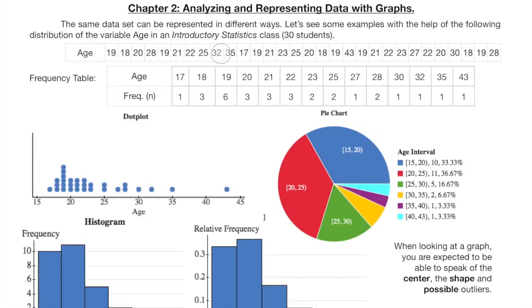Here I have the ages of 30 students in an introductory statistics class. This can be called the raw data set. Very often we prefer to have it in the form of a frequency table. This is the age and this is the frequency or absolute frequency, the count. One student is 17 years old, three students are 18 years old, six students are 19, three students are 20, and so on. If you add all these frequencies, you must get 30.